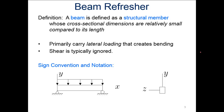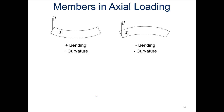Here are the overall sign conventions. X is along the axial length of the beam, Y is the lateral direction, and Z is out of the screen toward us. For members in bending, if it's a happy-face shape — smiling — we have positive bending and positive curvature. If it's a frown shape, we call it negative bending and negative curvature.